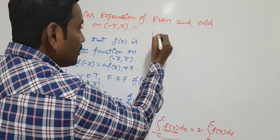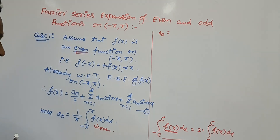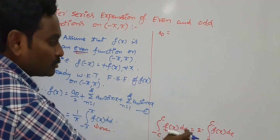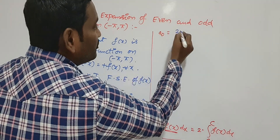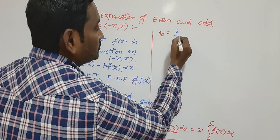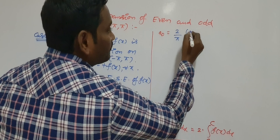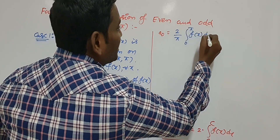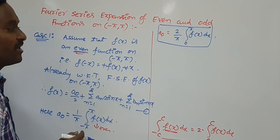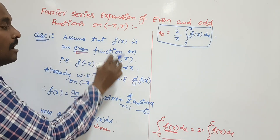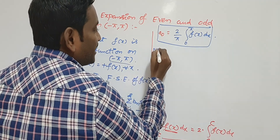Since we are assuming f(x) is even, a₀ becomes: a₀ = (2/π)·∫₀^π f(x) dx. This is the formula for a₀ when the given function f(x) is even on the interval (-π, +π).